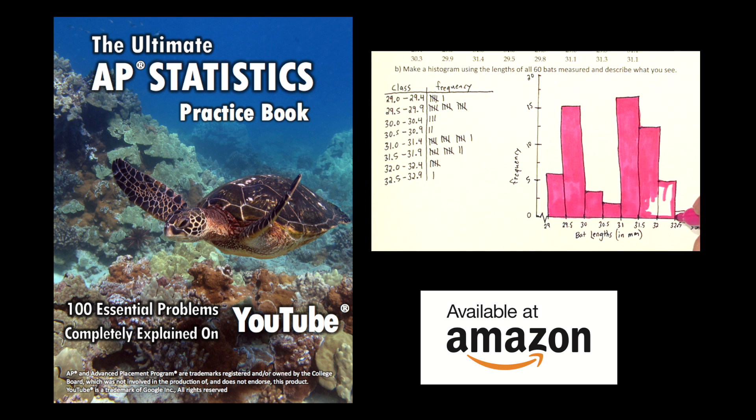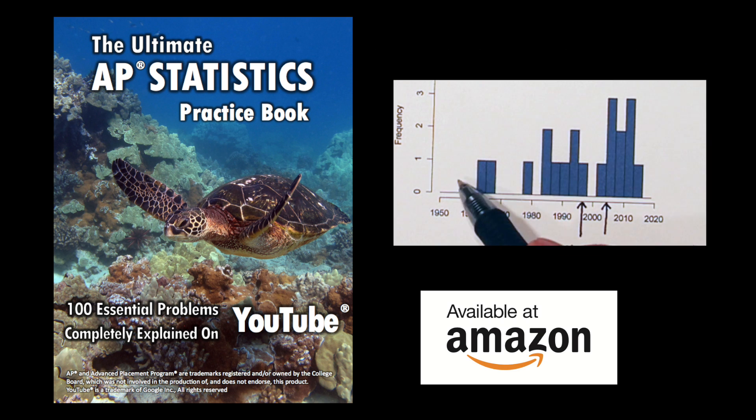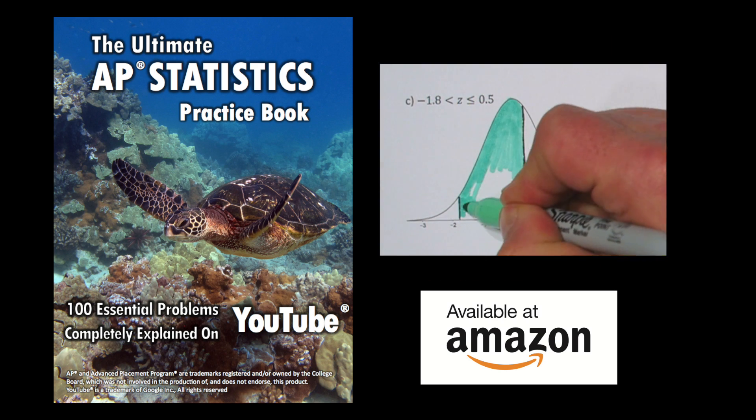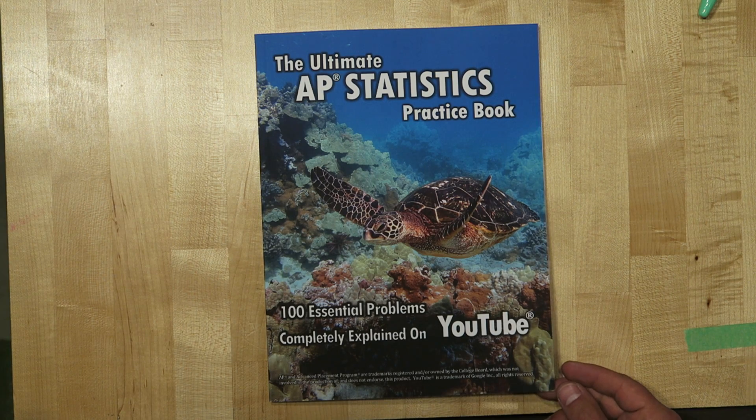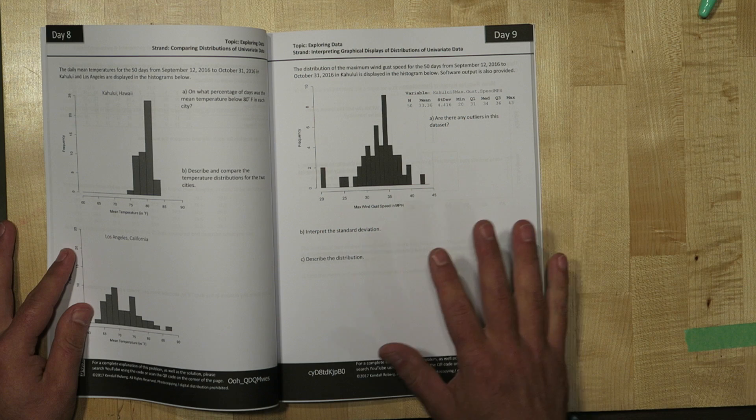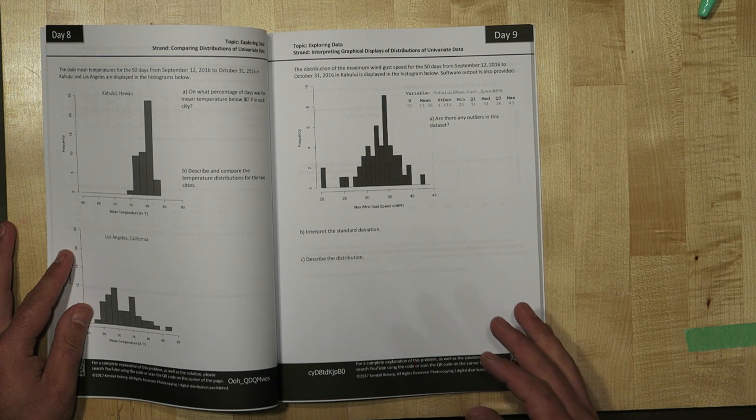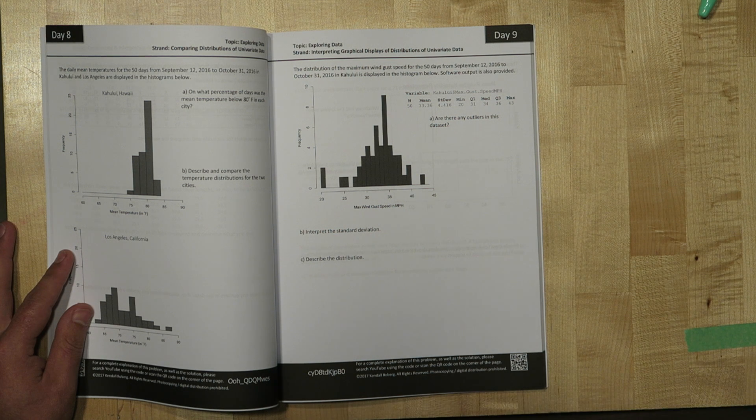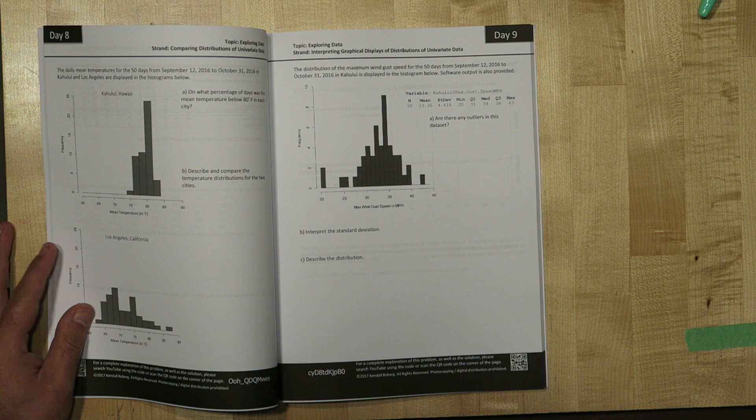If you liked my explanation of this problem, you might also like my book, The Ultimate AP Statistics Practice Book. The book has 100 problems, and every one of them has a YouTube video that explains every single step. So problem number 5 from this year's AP reminds me of problem 9 in the book. This is another problem where we use a histogram to make some calculations. I'll link to this video for this problem in the description, and you can see another example of my explanations.